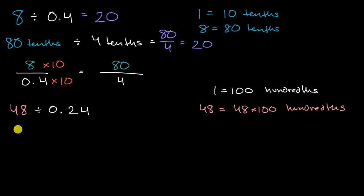So let's just, actually, I'll write it that way. This is going to be 4,800 hundredths divided by, this is 24 hundredths. 24 hundredths. And so what's that going to be?